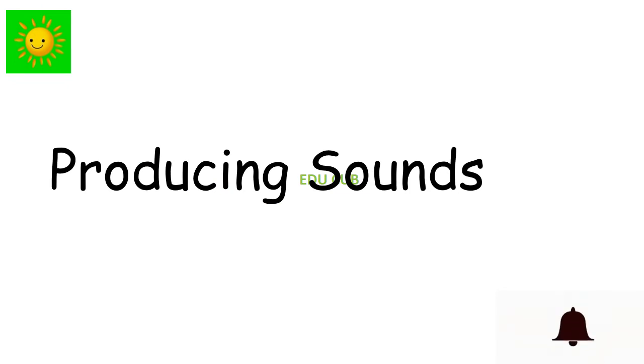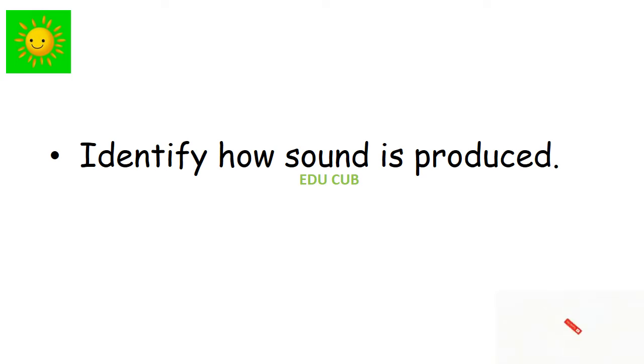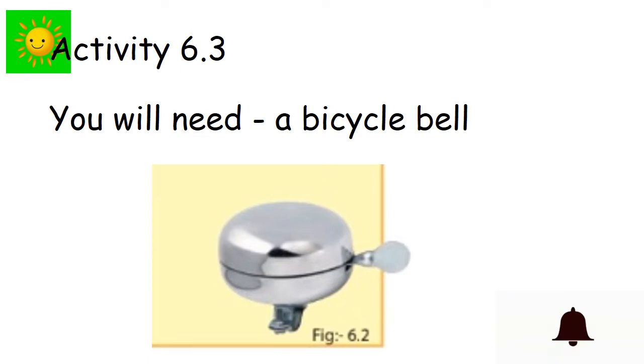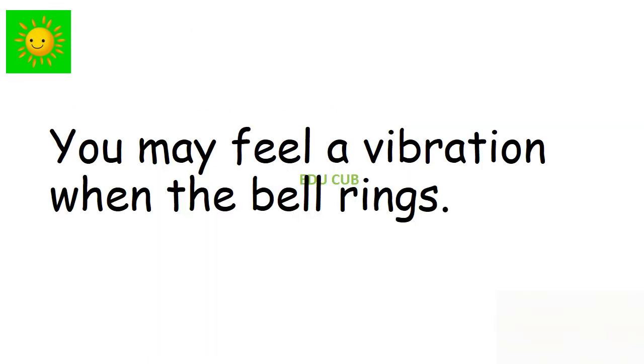Our first subtopic is producing sound. To identify how sound is produced, we can do this activity. We need a bicycle bell here. Ring the bicycle bell while it is ringing, keep the finger on it. Report what you felt. While you are playing the bicycle bell, you may feel a vibration on the bearings.